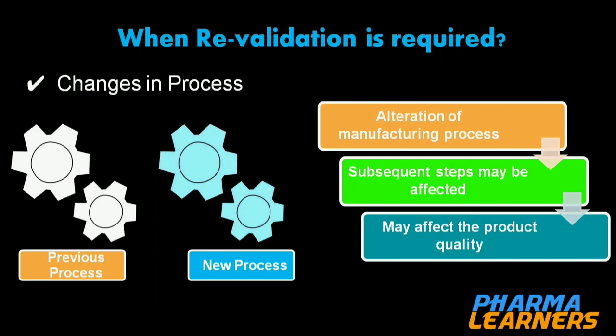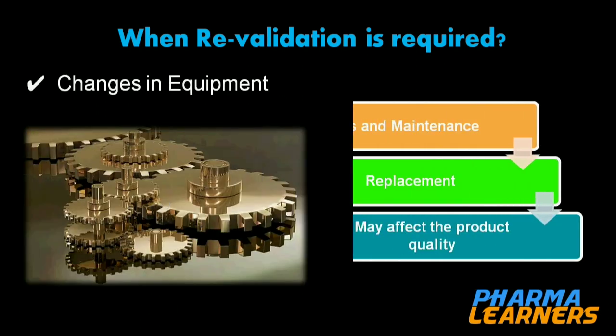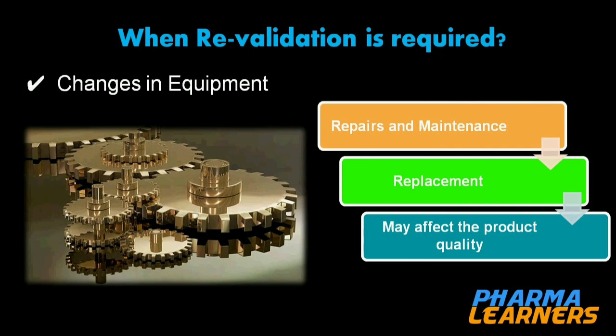The third example: changes in process. If you alter the manufacturing process, there may be a chance that subsequent steps are affected by the change. The fourth example: change in equipment. It is sometimes required to repair, maintain, or replace key components of equipment, so it is necessary to assess whether quality is affected after any major change, repair, or replacement.